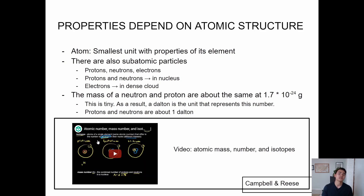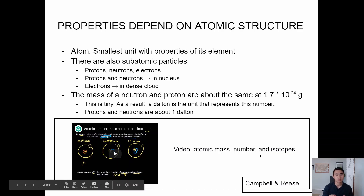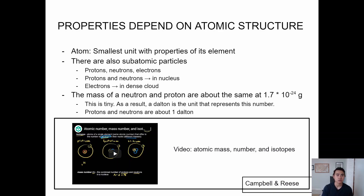There's another video on atomic structure and isotopes. It's important to understand the numbers on the periodic table and how to read it. Atoms are the smallest unit with properties of their element, made up of subatomic particles: protons, neutrons, and electrons. Protons and neutrons are found in the nucleus, whereas electrons are found on the outside — not in a confined orbital, but more like a dense cloud that moves around.